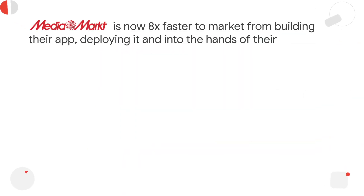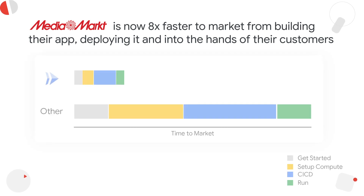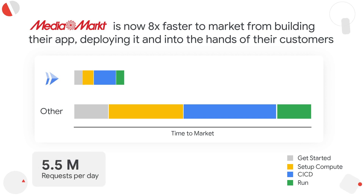Now let's see what our customers have to say. Media Markt, the number one consumer electronics retailer in Europe, was able to get 8x faster time to market. It took them 80% less effort to get to market and resulted in a 40% cost reduction. So what are you waiting for? If you found this interesting and would like to learn more, please reach out to us and we'll be happy to help solve your challenges together. Thank you.